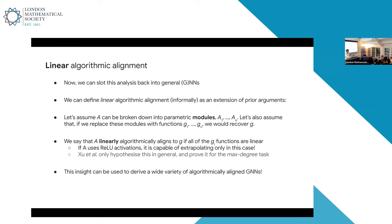Now that we understand how MLPs extrapolate with ReLU, let's slot that back into GNNs. We can define linear algorithmic alignment as a slight modification of previous arguments. Let's assume our neural network A can be broken down into modules, and if we replace those modules with functions we recover the target function. We say we have linear algorithmic alignment if all of these G_i modules are linear — so if all parts of your model have to learn a linear function, then you have linear algorithmic alignment. As we've just shown, if your architecture uses just ReLU activations, this is the only case in which it's capable of extrapolating. The authors of this paper have proved it for a specific task — the max degree computation task — and you can then use this insight to derive a whole load of algorithmically aligned GNNs just by trying to match your targets to be as linear as possible.